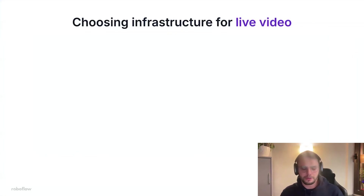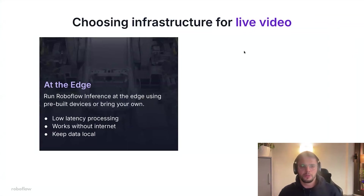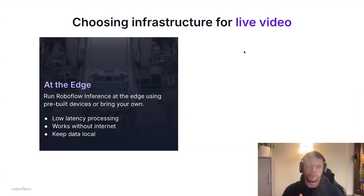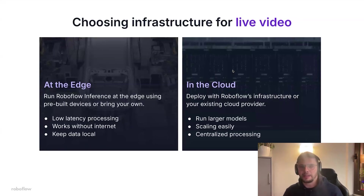Before we go into detail, let's quickly talk about choosing the right infrastructure for live video. For a lot of people, running inference at the edge is the preferred way. At RoboFlow, we offer our inference server to make it easier for people to do that, so you can run models on pre-built devices or bring your own. People prefer to run video on the edge because it comes with low latency, works without internet, or when you want to keep the data local. You can also process streams in the cloud — either with RoboFlow or with your existing cloud providers — for example, to run larger models or because it makes maintaining and scaling much easier.